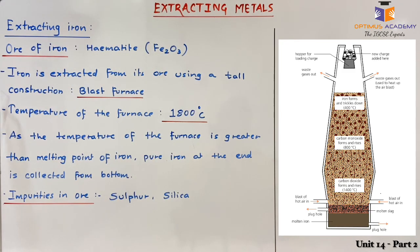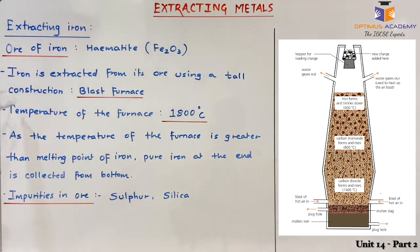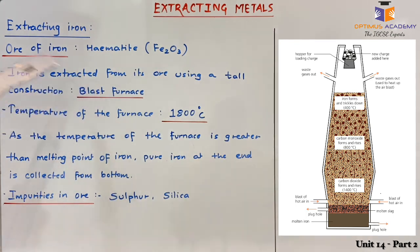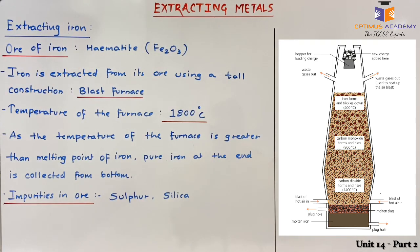Iron is extracted from its ore using a tall construction known as blast furnace. You can see the diagram of the blast furnace alongside. It is almost 30 feet tall construction wherein a lot of heat is generated to extract iron from its ore.